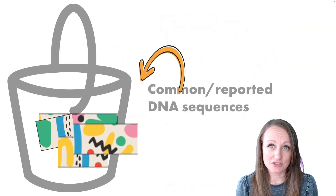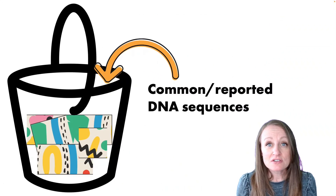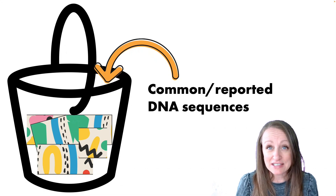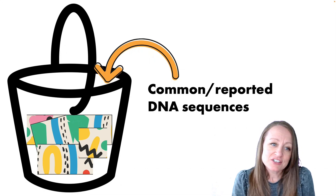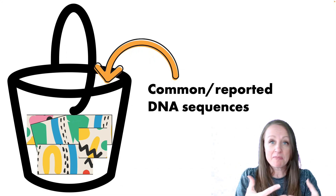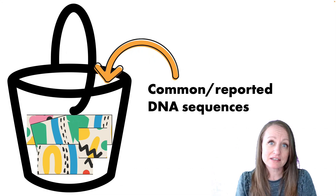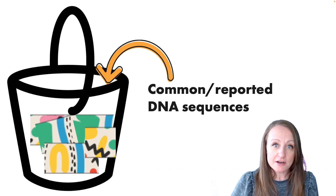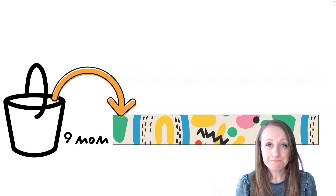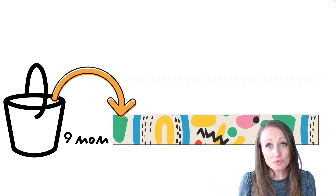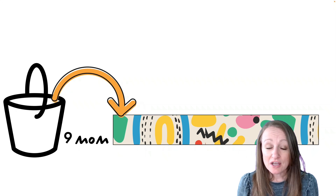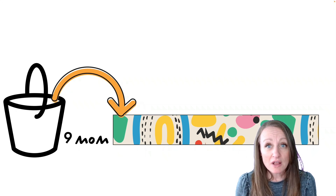This older kind of phasing technology is based on the human genome project, which was essentially a huge project to find the exact sequence of the entire human DNA genome. We have essentially a bucket of common or reported DNA sequences, and the testing company would look through your amalgamation of results, pull from this bucket, and say these are common sequences that often go together — therefore we're going to phase your DNA and say this group came from your mom and a different group came from your dad. This technology works pretty well for estimating relationships and ethnicity.